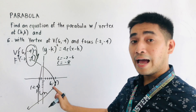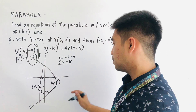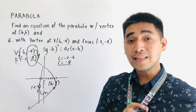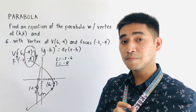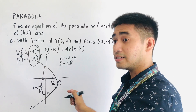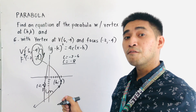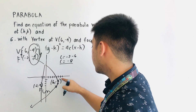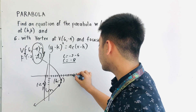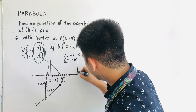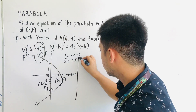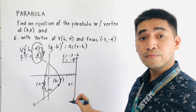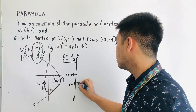From this, we will add 8 to the x-coordinate of the vertex. So from 6, let's add 8: 6 plus 8 is 14. So the directrix is at x equals positive 14.